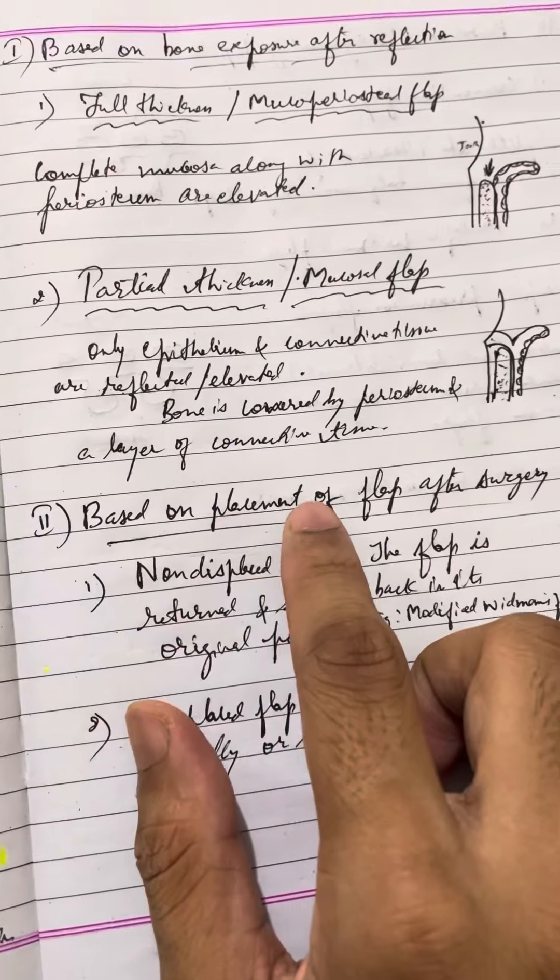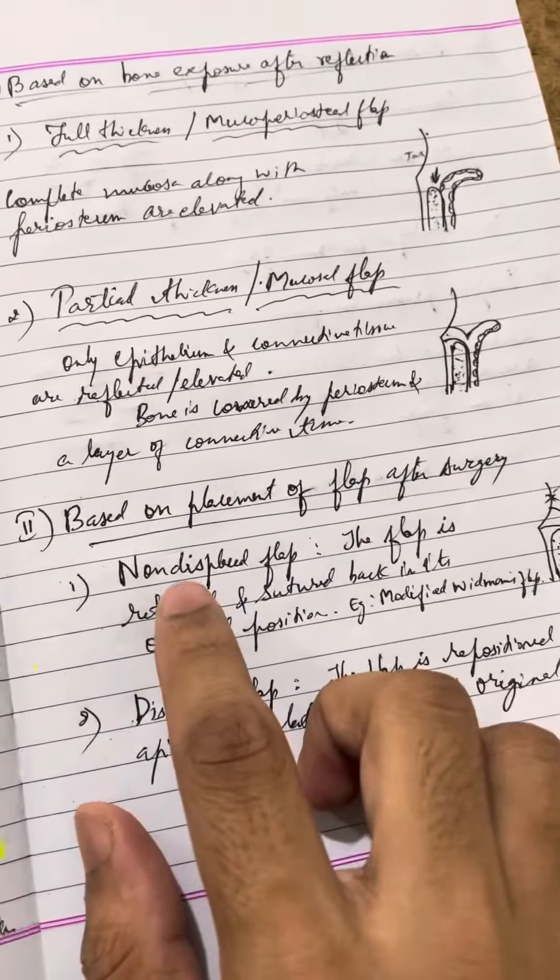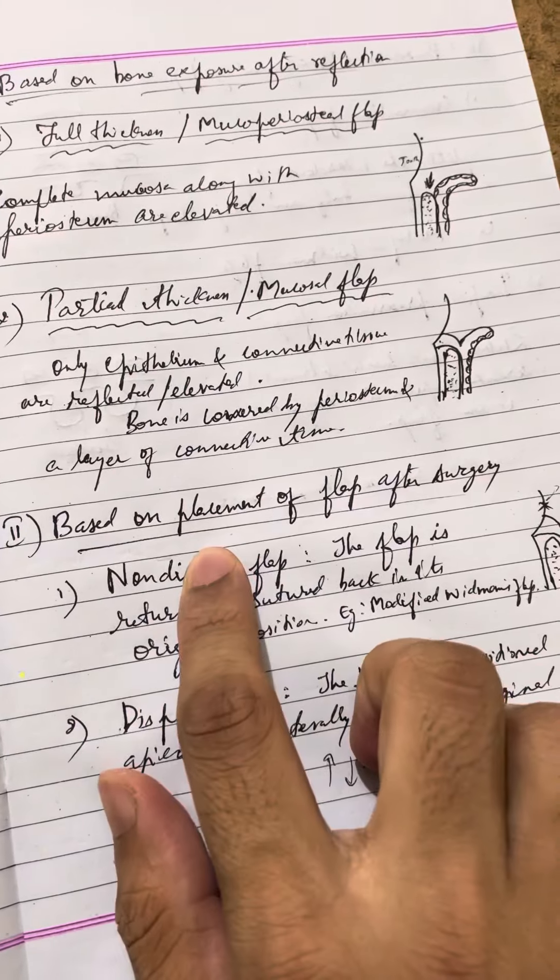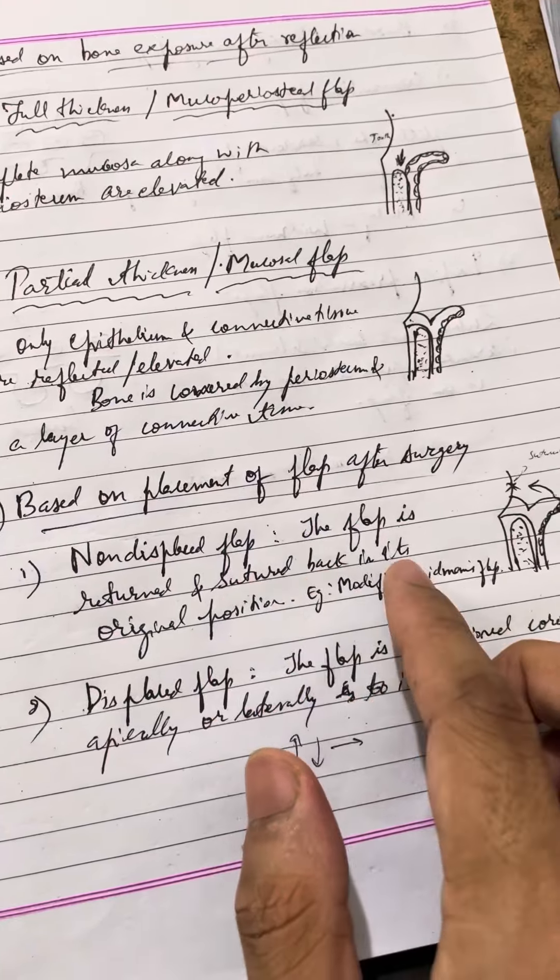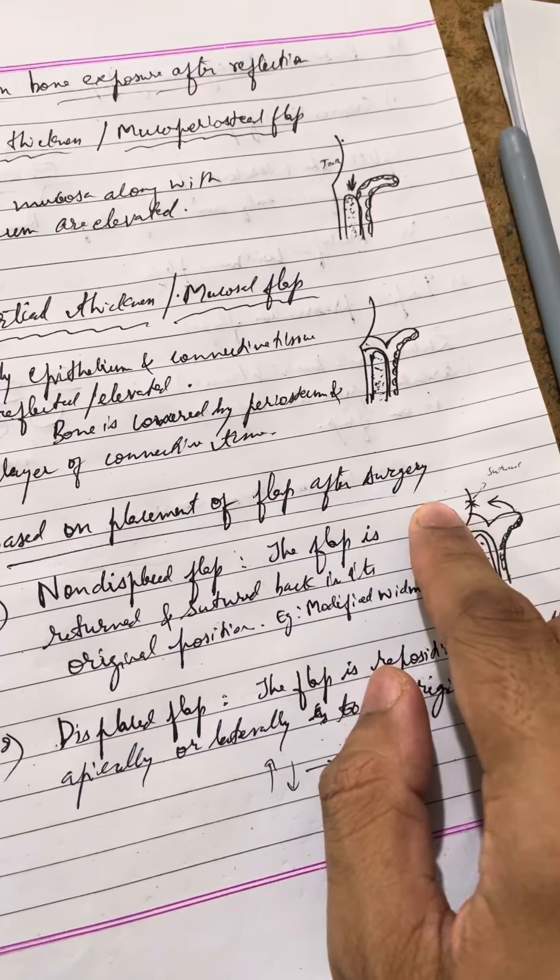Based on the placement of flap after surgery: Non-displaced flap - the flap is returned and sutured back to its original position. Example: Modified Widman's flap.